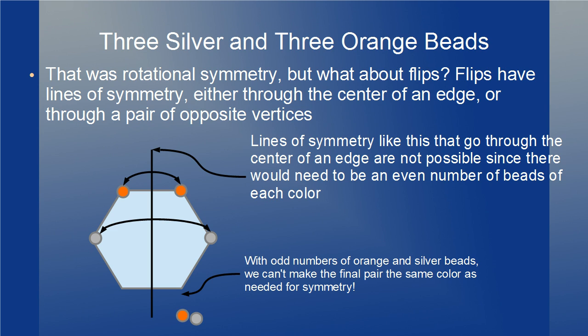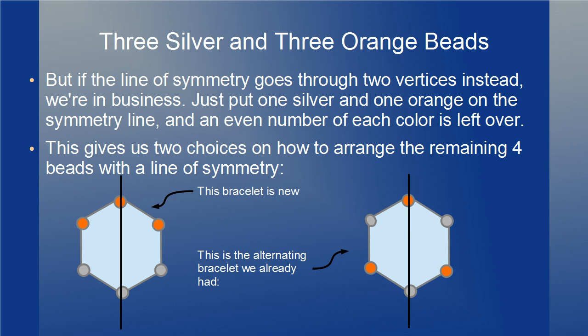That was rotational symmetry, but what about flips? Flips have lines of symmetry, either through the center of an edge or through a pair of opposite vertices. Lines of symmetry through the center of an edge are not possible, since there would need to be an even number of beads of each color. With odd numbers of orange and silver beads, we can't make the final pair the same color as needed for symmetry. But if the line of symmetry goes through two vertices instead, just put one silver and one orange on the line of symmetry, and an even number of each color is left over. This gives two choices of how to arrange the remaining four beads — one of these bracelets is new, and the other is the alternating bracelet we already had.